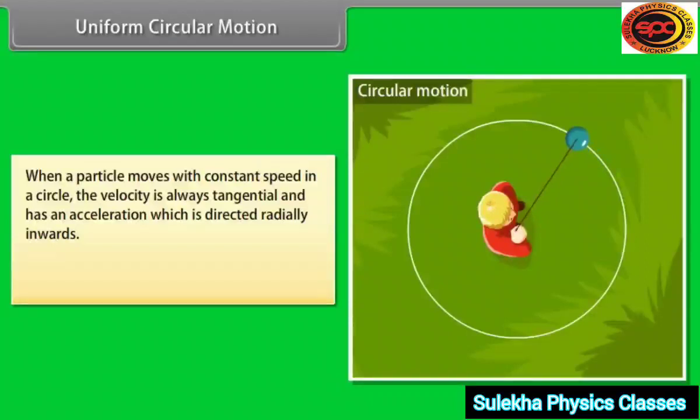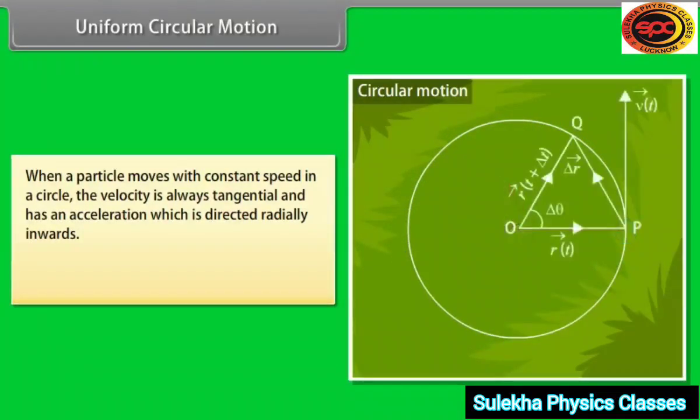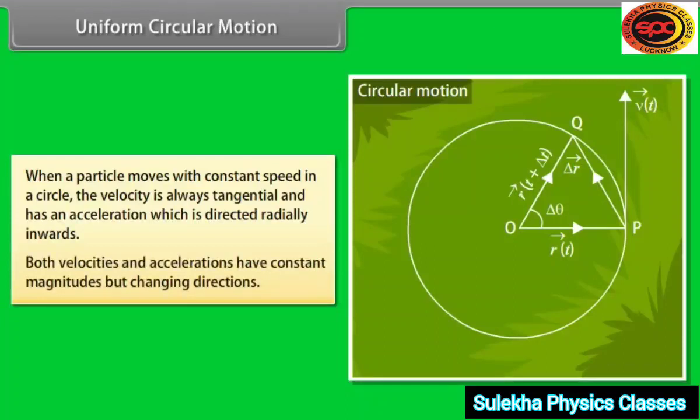When a particle moves with constant speed in a circle, the velocity is always tangential and has an acceleration which is directed radially inwards. Both velocities and accelerations have constant magnitudes but changing directions.